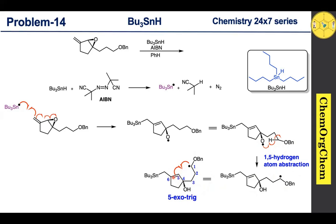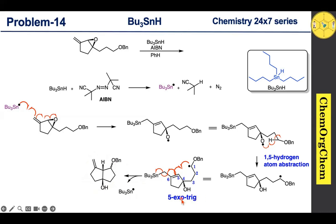Another electron moves here, followed by homolytic cleavage of the carbon–tin bond, which kicks off the tributyltin radical, giving the alkene product. Now let's note the stereochemistry.